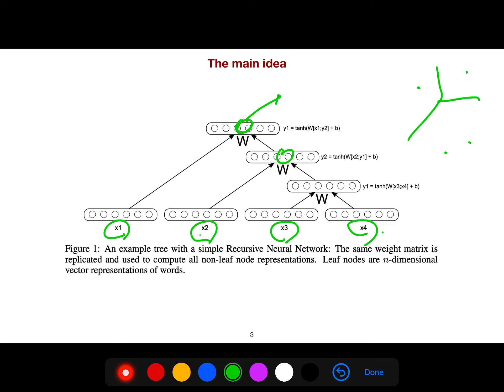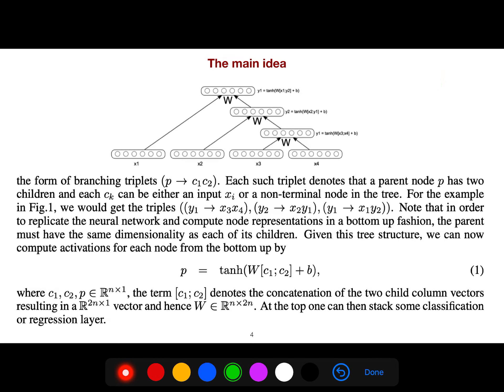But our motivation is different. We want to create a score. Because if we have a score, we can compare it with the score of the tree bank. Because we have the tree bank, we can create the loss. So the main idea is that we create a vector. At each node, we have a vector P.